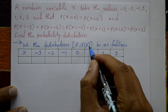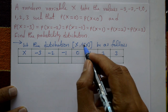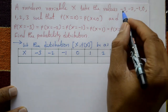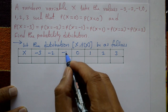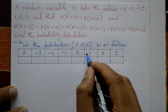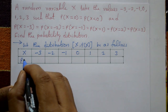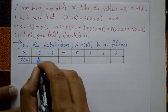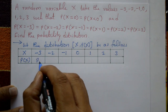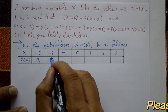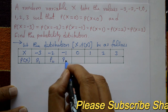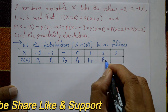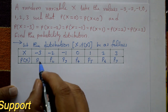For the solution, let the distribution of X and p(x) be as follows. The x values are minus 3, minus 2, minus 1, 0, 1, 2, 3, and p(x) values are labeled p1, p2, p3, p4, p5, p6, p7 respectively. We need to find these p values.